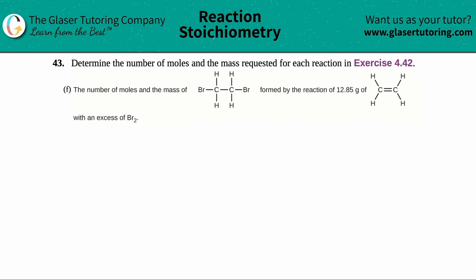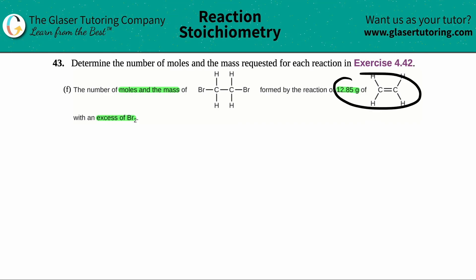Problem 43: determine the number of moles and the mass required for a reaction. We have letter F — we want to find the number of moles and the mass of a compound formed by the reaction of 12.85 grams of ethene with an excess of Br₂. We're given one number for one compound and asked to find information on another compound — this is automatically stoichiometry, which means the first thing you've got to do is get a balanced equation.